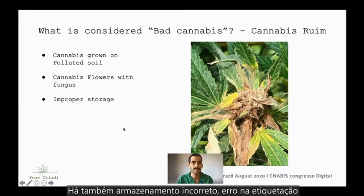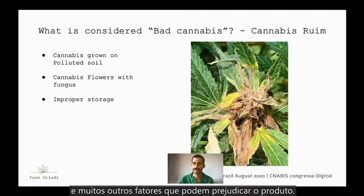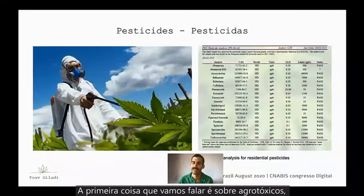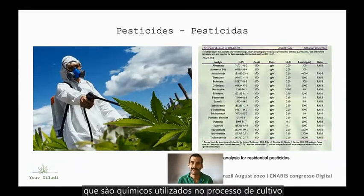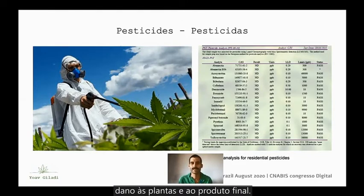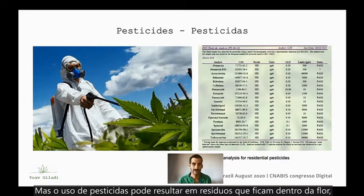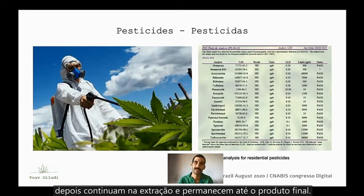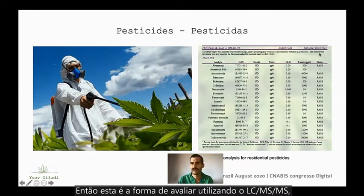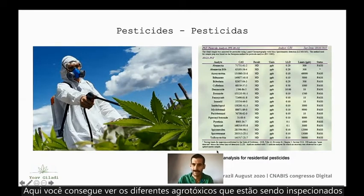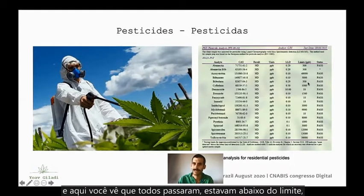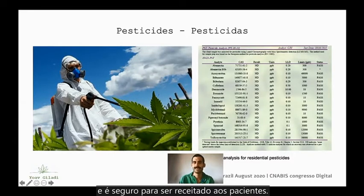The first thing we'll talk about is the presence of pesticides. Pesticides are chemicals used in the growing process to ensure that insects are not harming the plant or the final product. However, pesticide use can result in residuals that stay inside the plant flower and continue into the extraction, appearing in the final cannabis product. Here you can see the different pesticides being inspected using an LC-MS-MS. Everything passed — it's below the limit, so this product is free of pesticides and safe to be administered to patients.